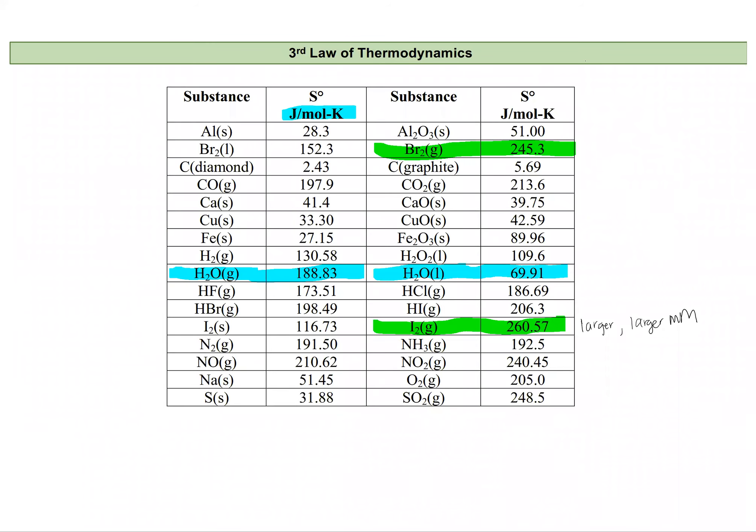This has to do with the energy states of a larger or heavier molecule being more closely spaced together, so we see more dispersal of energy through those closer-spaced microstates. Let's compare another set of entropies — allotropes — looking at solid carbon in two different forms.